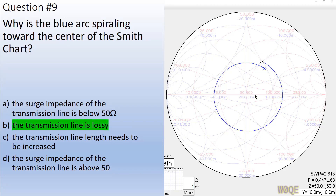Here the correct answer is B — the transmission line is lossy. What we have is a nearly circular path, but we see it's starting to spiral inward, and that spiraling inward is due to loss in the transmission line.